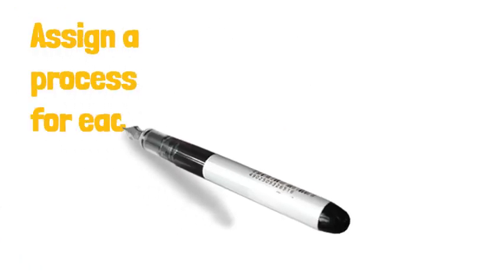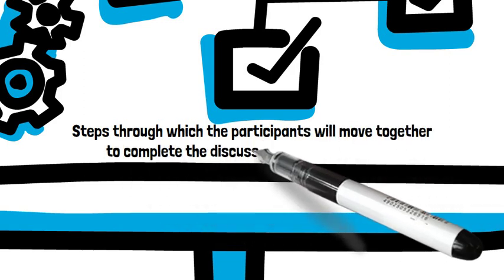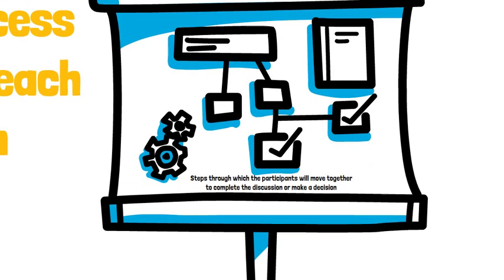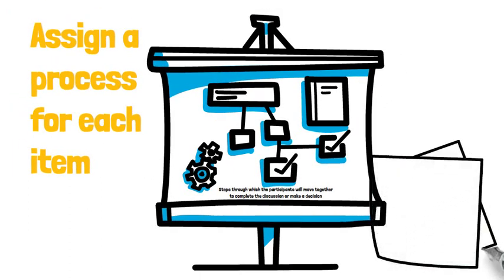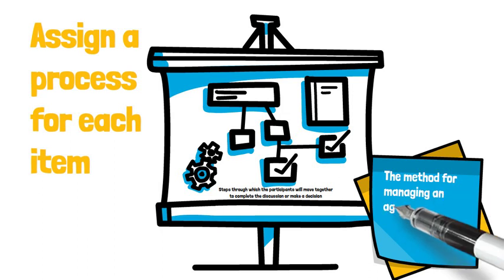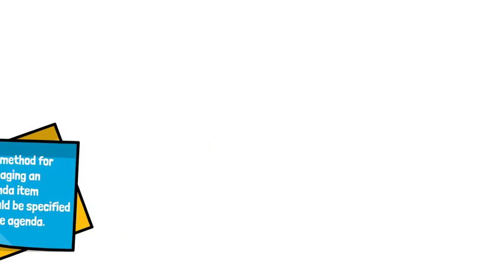Ninth, assign a process for each item. The process identifies the steps through which participants will move together to complete the discussion or make a decision. Agreeing on a process significantly increases meeting effectiveness. Without a process in place, participants will get involved according to their own tactics, leading to confusion — some trying to identify the issue, others questioning why it's on the agenda, and some already proposing solutions. Therefore, the method for managing each agenda item should be specified on the agenda.